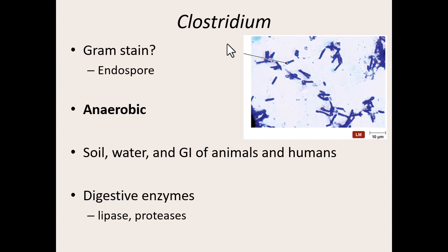Other virulence factors of Clostridium include two unique enzymes: a lipase and a protease — and they're enzymes, ending in '-ase.' Lipase breaks apart lipids; protease breaks apart proteins. These two enzymes really allow these bacteria to digest us — they can start to digest different tissues, break apart phospholipid membranes, and break apart proteins in our cells. So they can really do a lot of damage by digesting us.